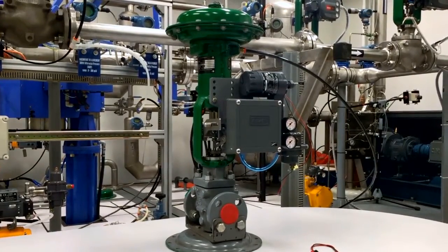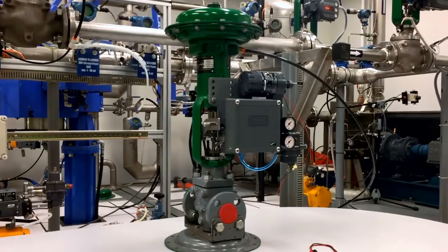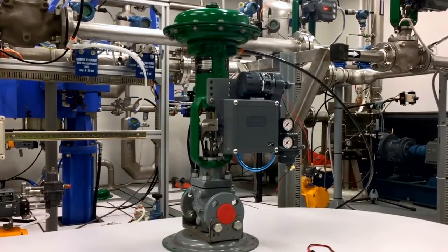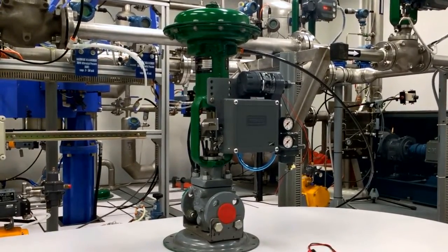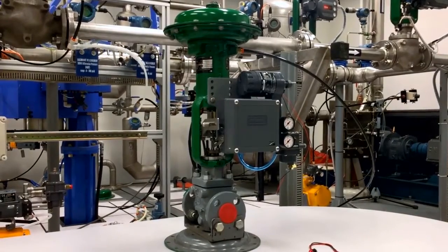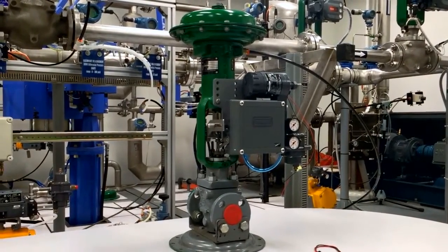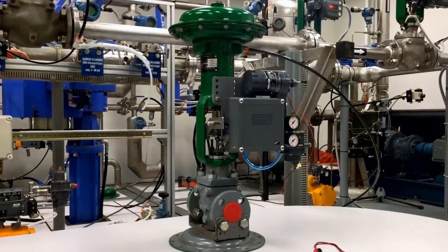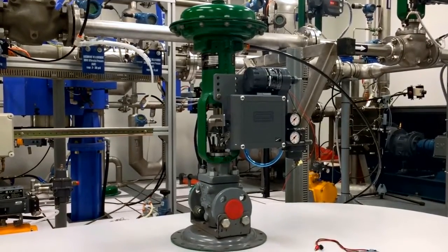It is also available as the 3582 which is a pneumatic positioner and accepts a pneumatic input signal. In this demonstration we are using the 3582i with a Fisher 667 actuator, a reverse acting actuator and also with a push down to close valve.